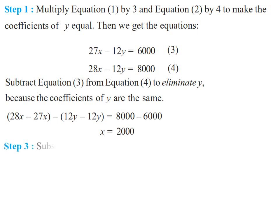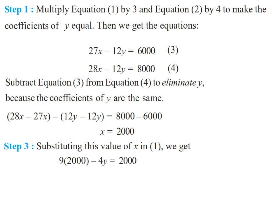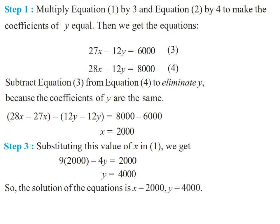Step 3: substitute this value in equation number 1. You can also substitute in equation 2, but not into equations 3 or 4. Substituting x equals 2000 into equation 1: 9 into 2000 minus 4y equals 2000. After simplifying, y equals 4000. So the solution is x equals 2000 and y equals 4000.